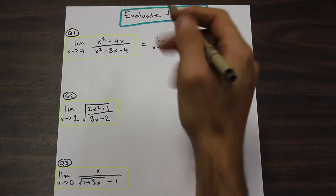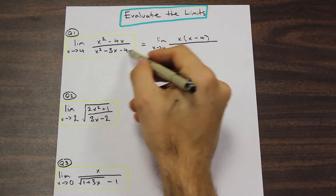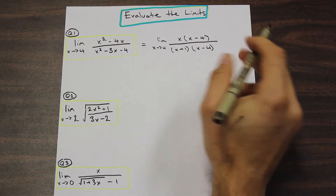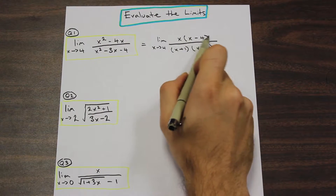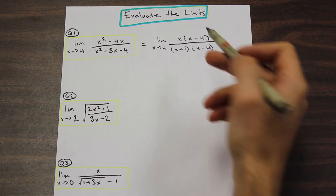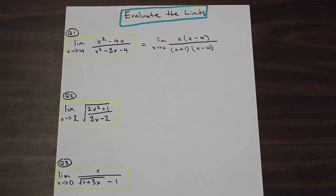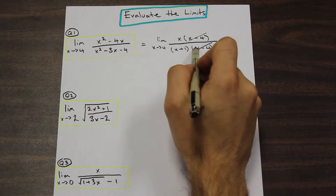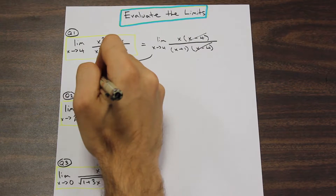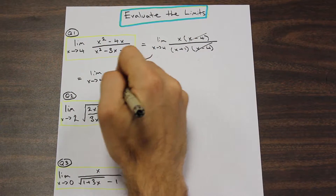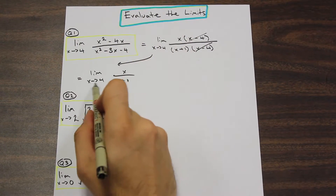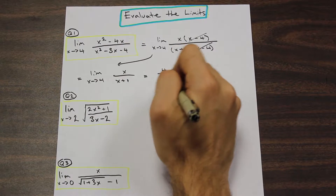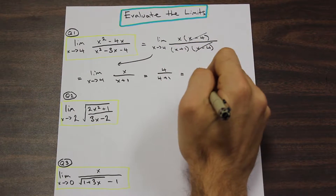Brush up on your factoring skills. Looking at the numerator, factoring out x gives us x times (x minus four). For the denominator, we can factor it as (x plus one)(x minus four). A helpful trick: if you can spot a matching factor in the numerator, you can cancel it. We cancel the (x minus four) terms, leaving the limit as x approaches four of x over (x plus one). Plugging in gives us four over five — that is our limit.